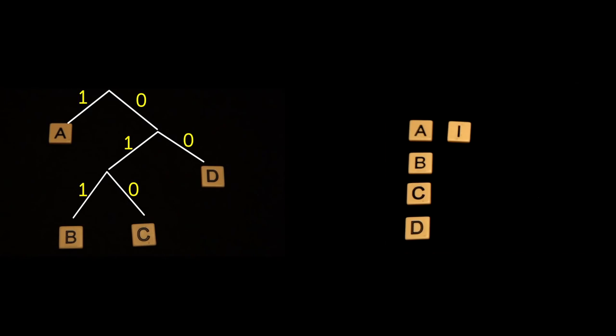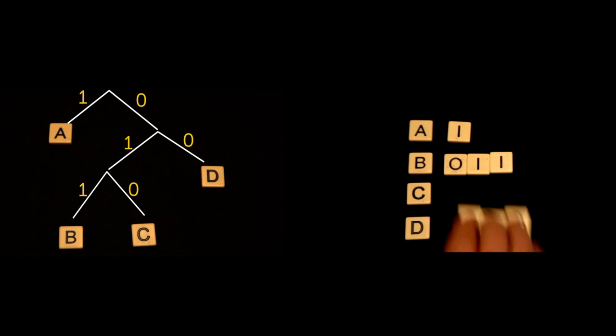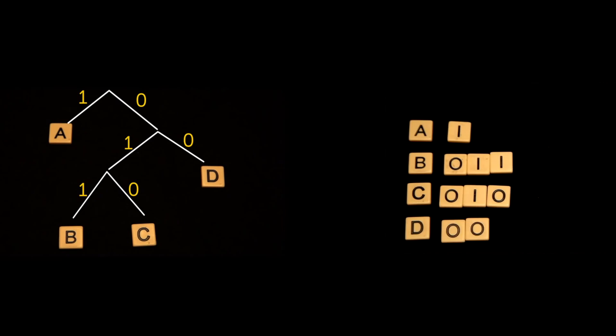Now, the code for each letter is just the path from the top of the tree to the given letter. So for A, it's just one edge, or 1. This is now known as Huffman coding, and for examples of the following type, you cannot beat it. Go ahead and try.